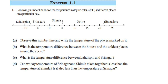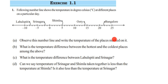Here is a question on Exercise 1.1, Chapter Integers of Class 7. The question shows a number line with the temperature in degree Celsius at different places on a particular day. They have given different places and four questions. The first question is to observe the number line and write the temperature of the places marked on it. On the right side of zero we have Shimla, Ooty, and Bangalore; on the left side we have Lahuspith and Srinagar.